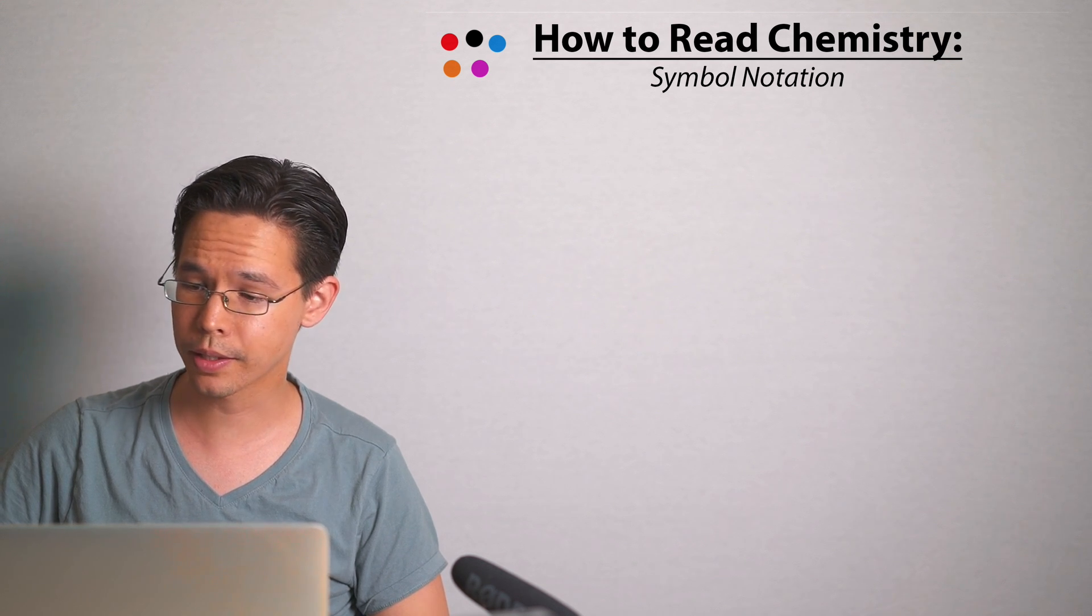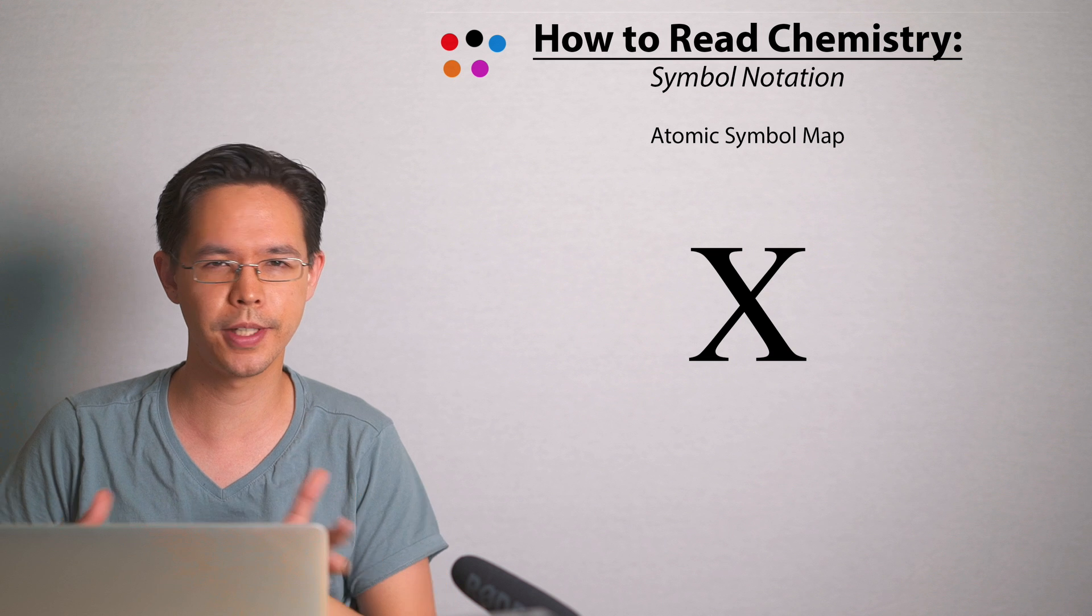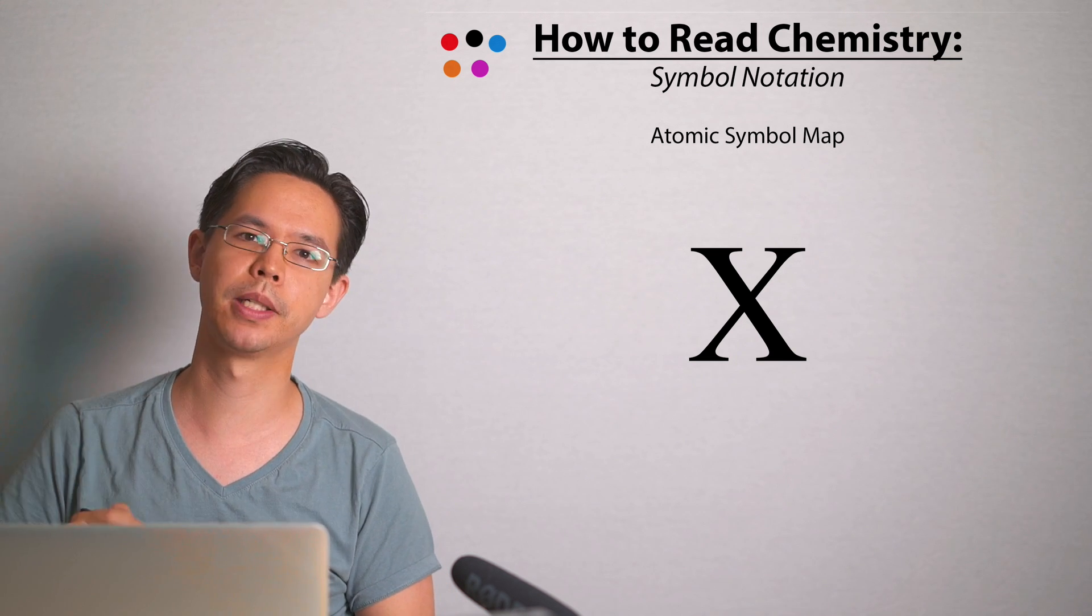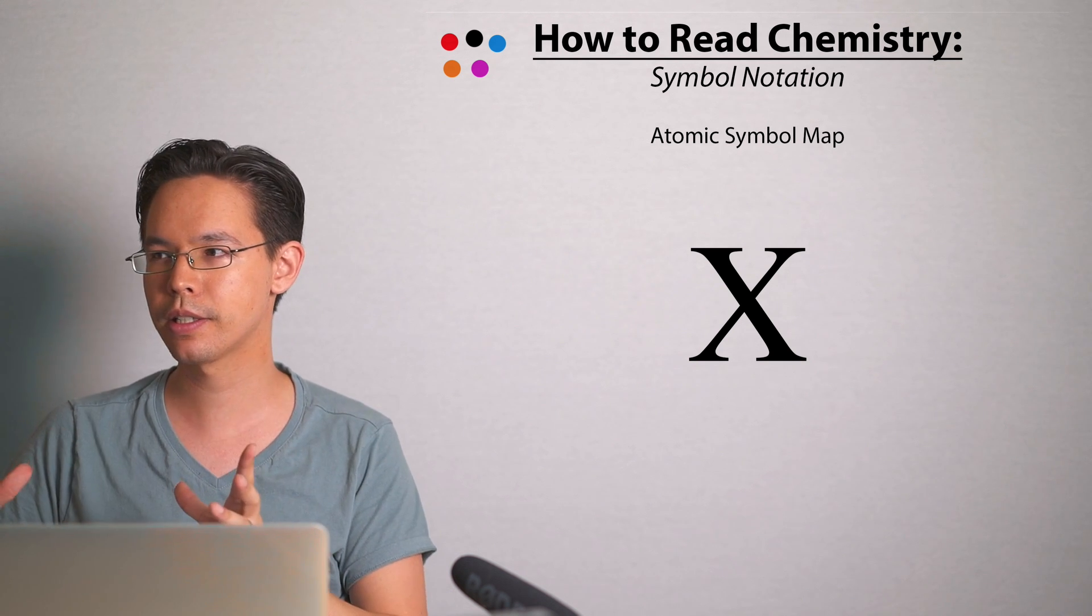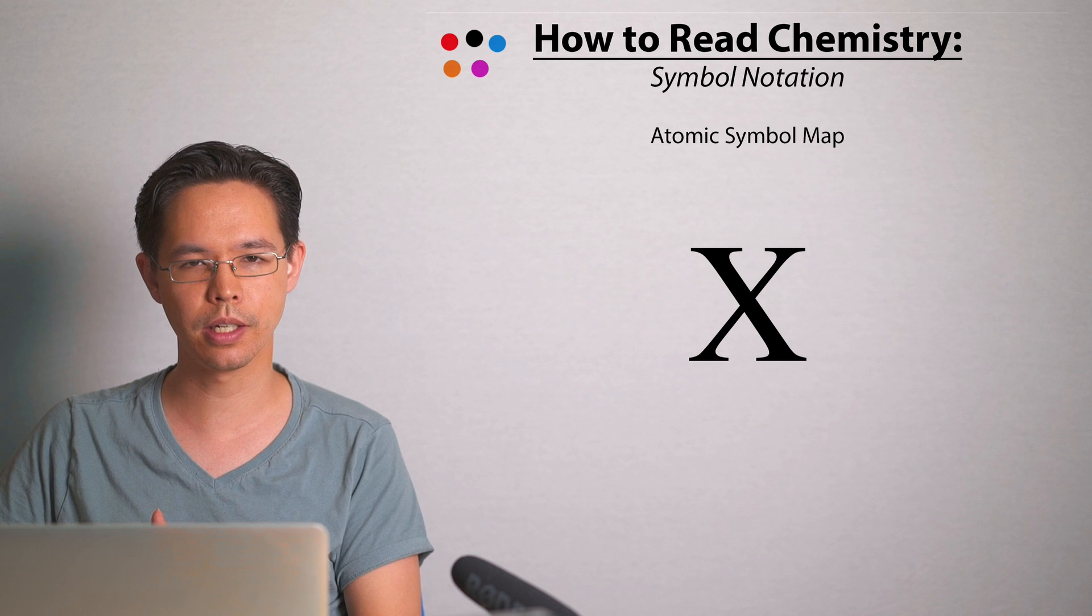To help you understand, I've put together this learning tool which I call the atomic symbol map. There's a big X in the middle of this map. If you look on the periodic table, there is no element X, at least not X by itself. I mean, there's xenon which is X lowercase e, but there's no element X.